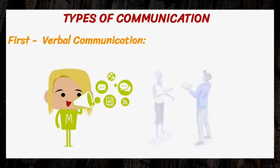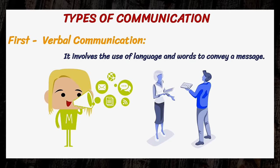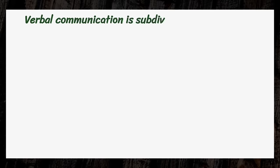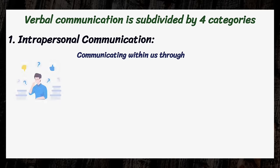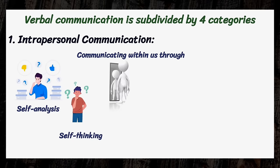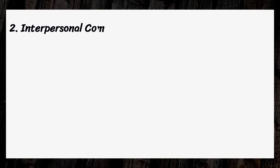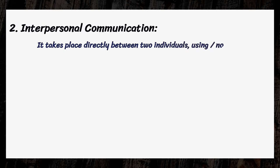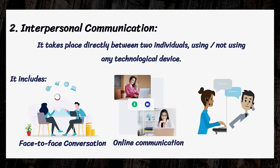Now let's discuss the types of communication. First, verbal communication. It is the most general type of communication that involves the use of language and words to convey a message. Verbal communication can be subdivided into four categories. Intrapersonal communication is the communication within us through self-analysis, self-thinking, reflection, solo-talking, self-awareness, and assessment. Interpersonal communication takes place directly between two individuals, using or not using any technological device. It includes face-to-face conversation, online modes of communication, telephonic conversation, and so on.